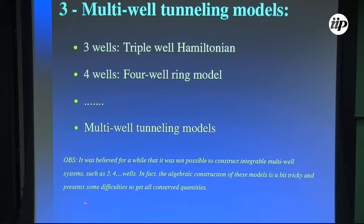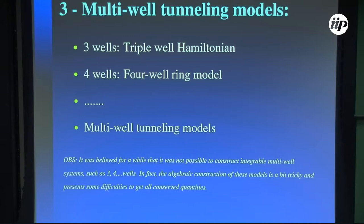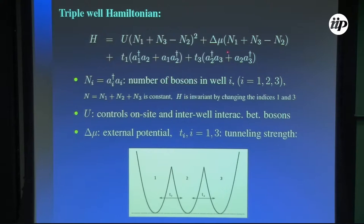It was believed for a while that it was not possible to construct integrable multi-well systems. People believed integrable models could be constructed with two wells or with an infinite number of wells, but not with three, four, or n wells. The algebraic construction of these models is very tricky — it's very difficult to get all conserved quantities. But in the end, we can do this, and we can construct integrable triple-well Hamiltonians.